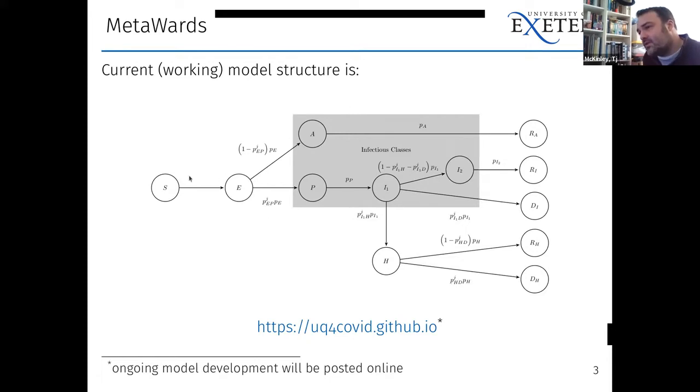We have parameters in the model that govern not only the transmission terms, but they also govern the amount of time that individuals spend in these various compartments. And importantly, what we wanted to build in from the outset was some age dependence, particularly in terms of the probability of transitioning down these different pathways. So it became fairly clear early on in COVID that the chance of you having a more severe outcome is very age dependent. And so some of these parameters, particularly the ones governing the transition probabilities, we have built age dependence into this from the outset. If anyone is interested, all of the model and model development are published online at this website.